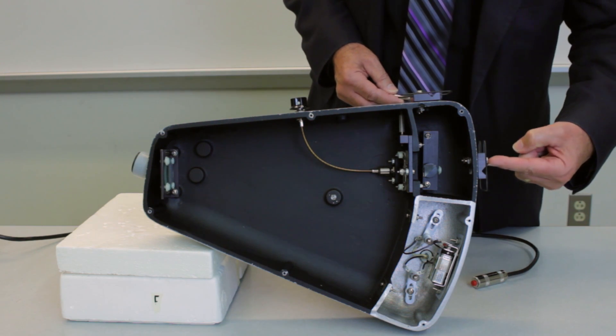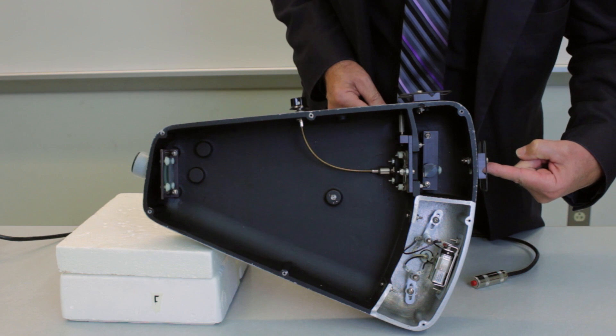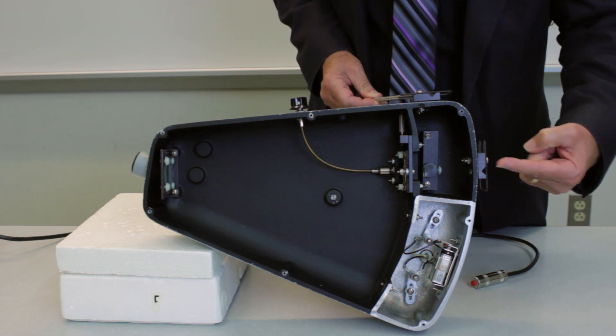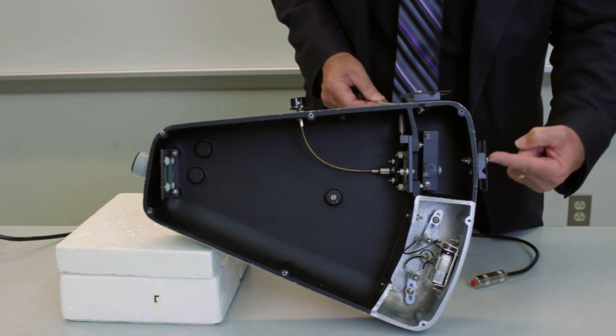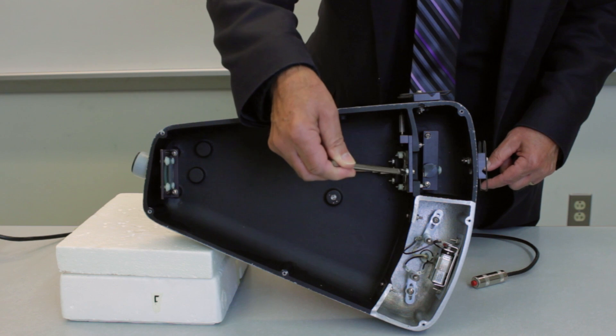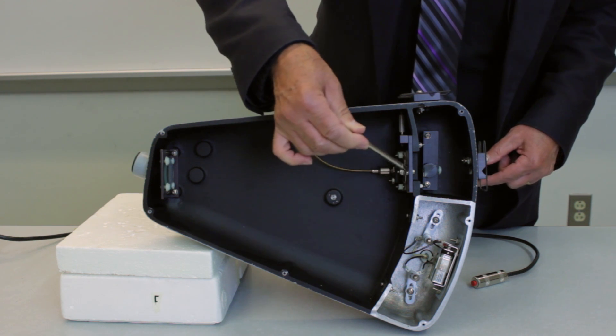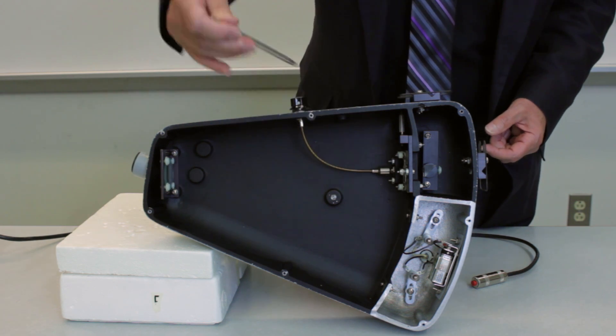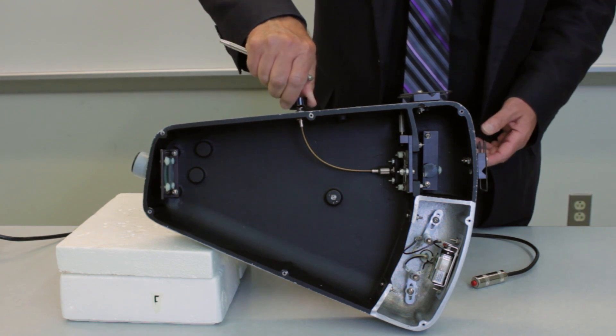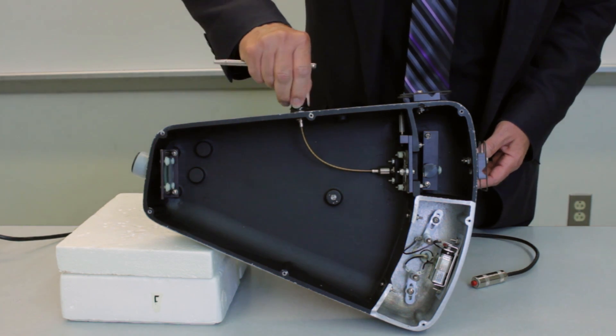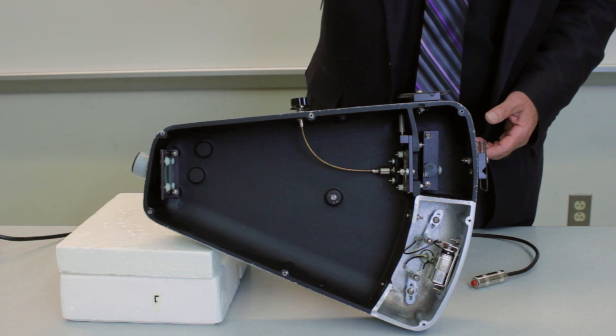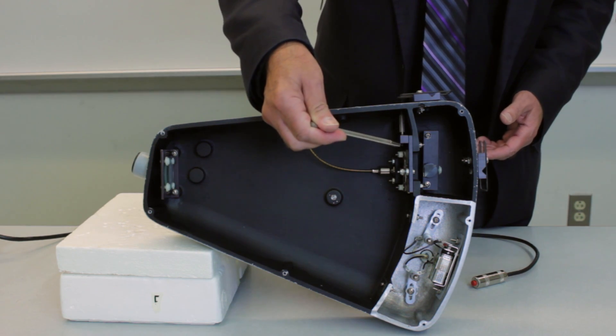The slit where the light comes into the instrument is at the front end right here. And if you recall the schematic diagram that we drew on the board, I indicated this as a variable slit. It's actually not. The variable part is right here inside the instrument. It's a pair of razor blades mounted on springs. And the separation between the razor blades is adjusted by this little knob right here. Now there's really no need to draw the knob on your diagram. That's not essential to understanding how the instrument works. But you need to know that the knob is here. The function of this is to let more light into the instrument if you need it.